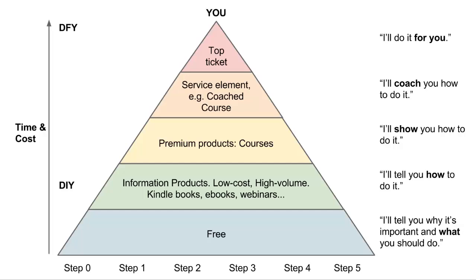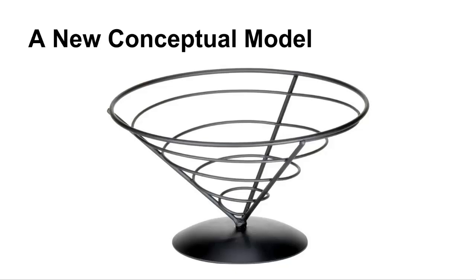That picture is quite complicated — visualizing the loop from free through low value, mid value, high value, to the inner circle. So I slept on it and came up with another picture. The best image I could find is actually a fruit bowl. This is the model I think it would be useful to have in our minds: it's a spiral that goes through loops round and round those awareness steps. You start at the wide diameter, which is your free stuff — what was the bottom of our pyramid has now, in a way, become a funnel. But it's not just a direct funnel — this is a funnel where you go round many times, like a helter-skelter.